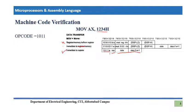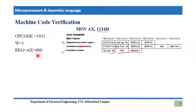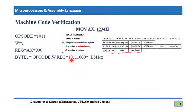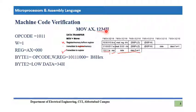The opcode is 1011. W is 1 since it is a 16-bit operation. The register code for AX is 000, which you can verify from the machine code conversion table. So Byte 1 combines opcode, W bit, and register field: 1011 1 000, which gives B8 hex. Byte 2 is the lower byte of the immediate data, which is 34h.